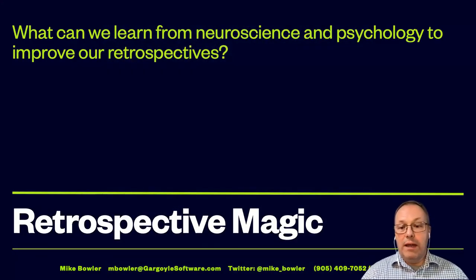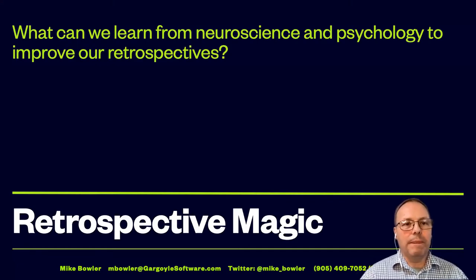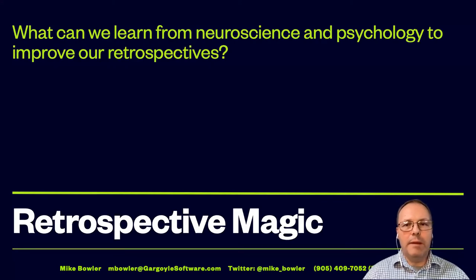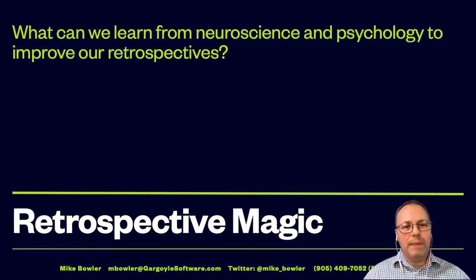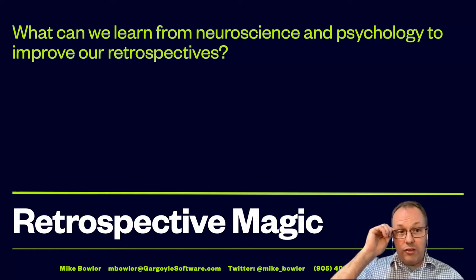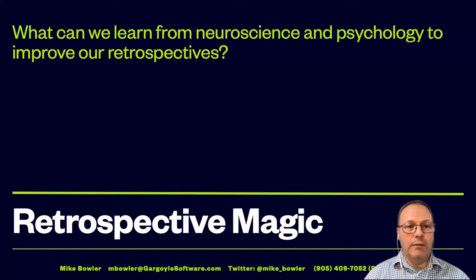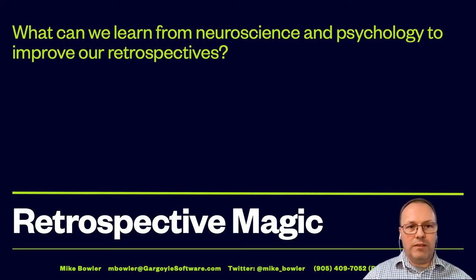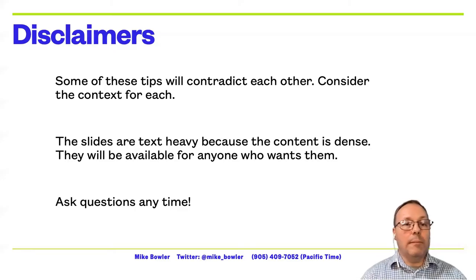I'm a long-time coach and trainer. I started my agile journey about 20 years ago, and along the way I discovered that the trickiest part was all that messy people stuff — why do people do the things they do, how do we motivate people to get better, how do we get people to change? That journey took me into neuroscience, psychology, hypnosis, body language, and a whole bunch of other things, and pretty much everything we're going to talk about tonight comes from those worlds.